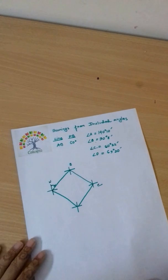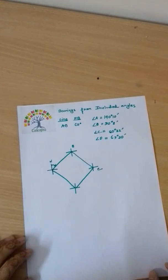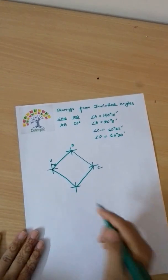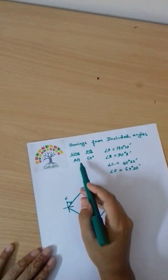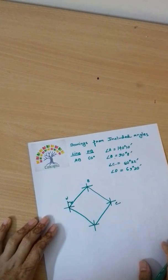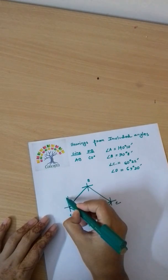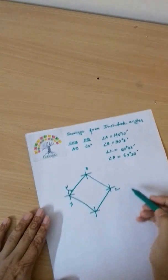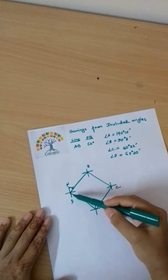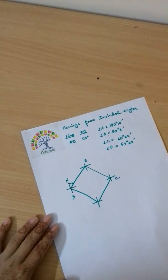I am going to show you the concept of the video tutorial and the included angles of the bearing. First we have 4 bearings and 4 included angles. Now let's see what we have — we have a figure drawing and we have to draw the traverse.